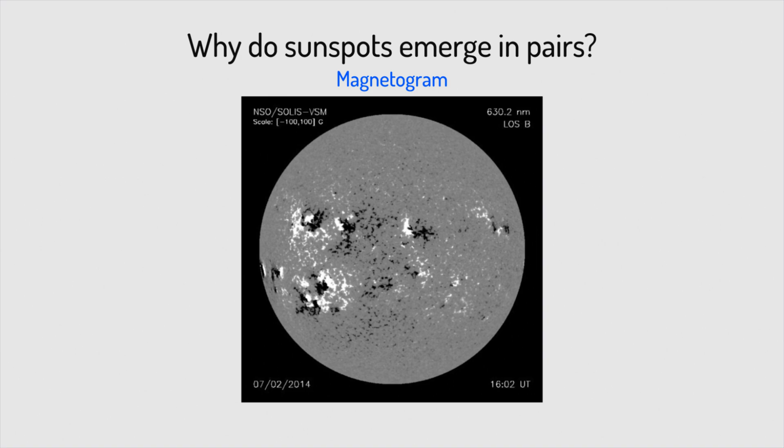Sunspots often appear in pairs. The black and white regions in the magnetogram indicate magnetic field lines piercing into and out of the photosphere. In other words, the fields in these regions have the opposite polarity. These pairs also tend to develop both in the northern hemisphere and the southern hemisphere. An interesting question is why?